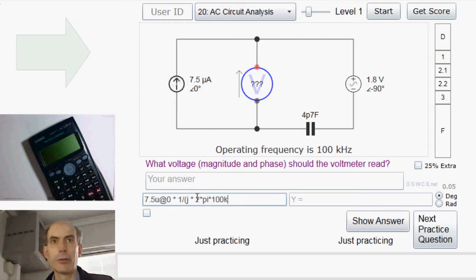Multiplied by the capacitance, 4.7 pF. So that's the voltage, about 2.5 volts at minus 90 degrees.